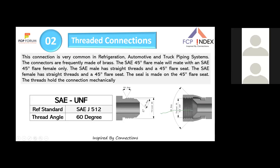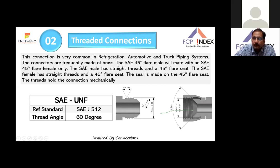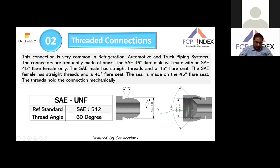SAE 45-degree flare (SAUNF) is common in refrigeration, automotive, and truck piping systems. The seating is at 45 degrees. The SAE 45-degree flare male and female both have straight threads and a 45-degree seat. The seal is made on the 45-degree seat and the connection holds mechanically. The international standard is SAE J512 and the thread angle is 60 degrees.